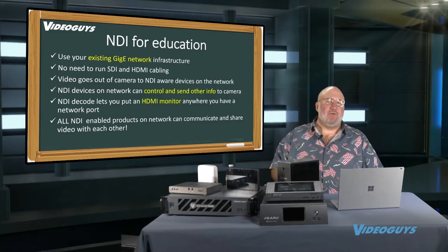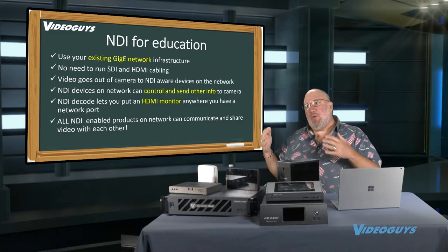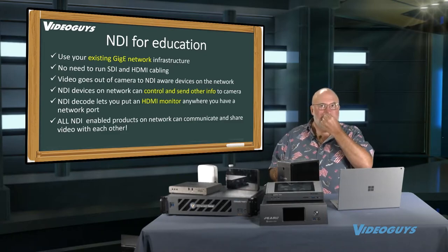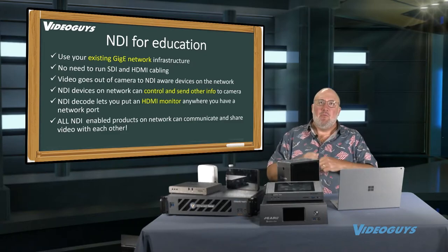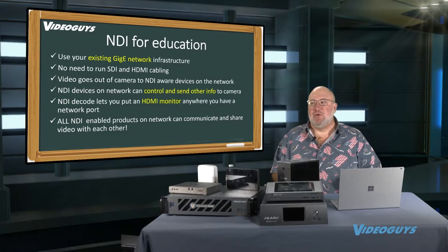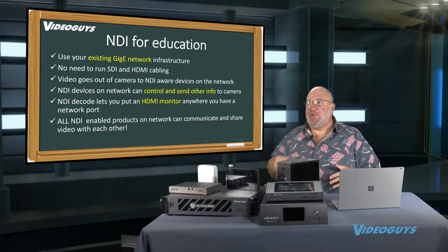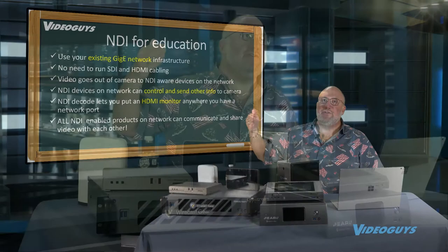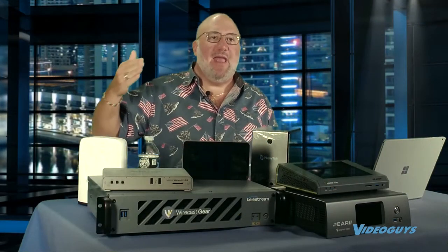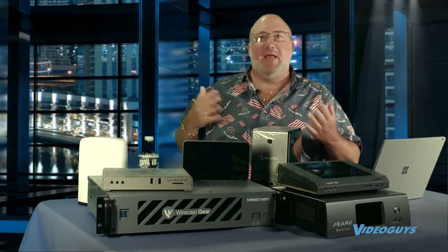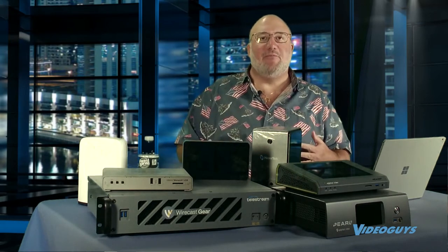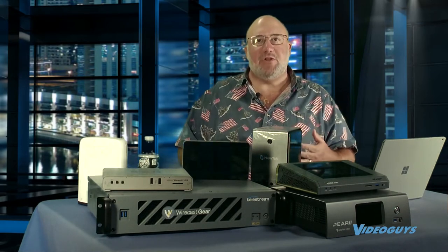You can also decode. That means anywhere you have a network jack, you can take a decoder — those are inexpensive devices, and we've done many shows on them from Bird Dog, New Tech. With your decoder, you can plug an HDMI TV in, and anywhere you have a network jack, you can now have a television monitor presenting anything from any camera or any mixer on the network.